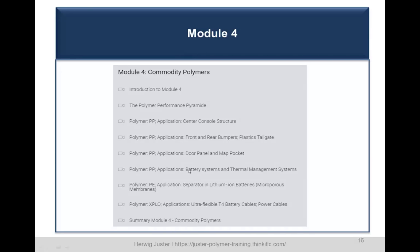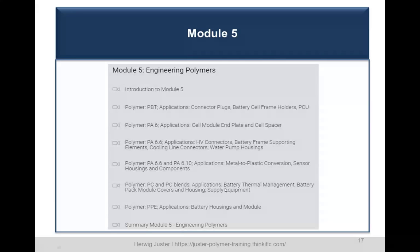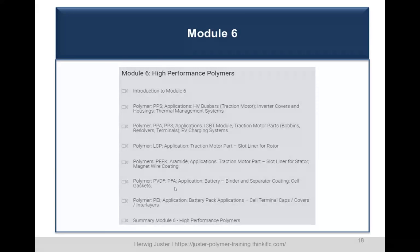Each of these modules ends with a summary. Looking at the course content snapshots available on the polymer-training platform, for polypropylene we will discuss center console structures, front and rear bumpers, door panels, battery system, and thermal management system applications. For engineering polymers we go through each major class with its applications. Same approach is used for high-performance polymers, with applications ranging from high-voltage bus bars to traction motor and battery components, each chapter closing with a summary.